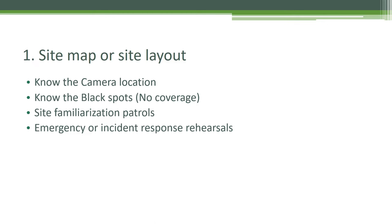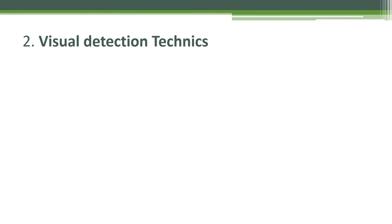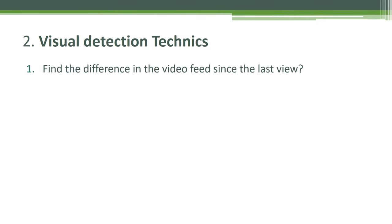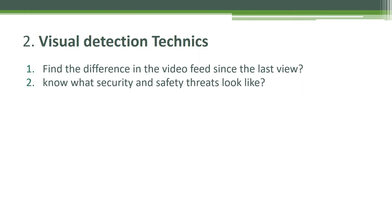Skill two is visual detection technique. Some crucial techniques the CCTV operator must learn: he or she should be smart enough to identify abnormal and normal situations. Guidelines for detecting unusual activities — first, find the difference in the video feed since the last view. Try to find what was there when you last viewed a specific location and what is there now.